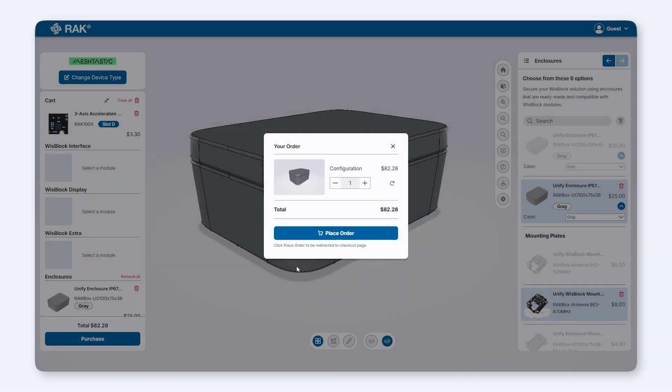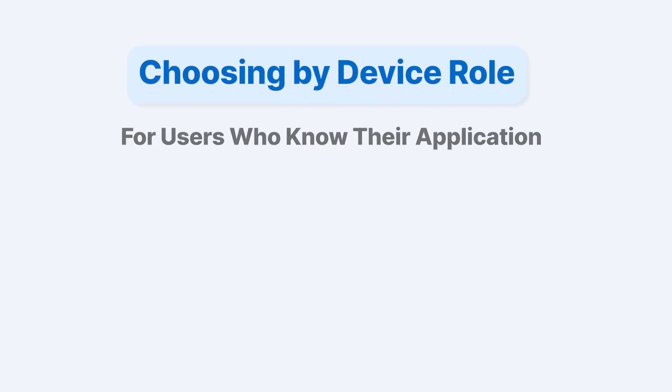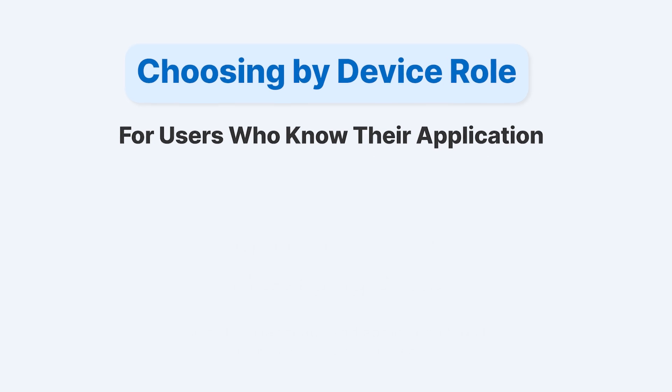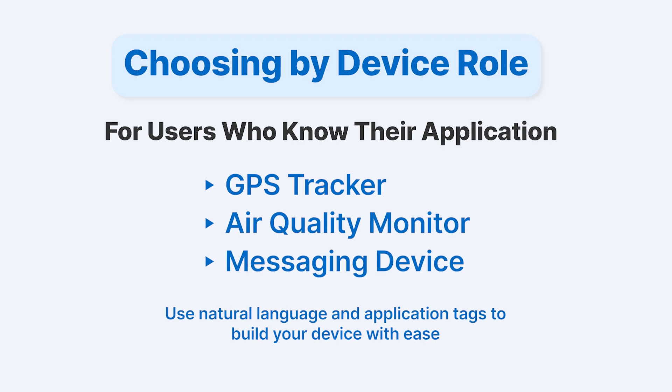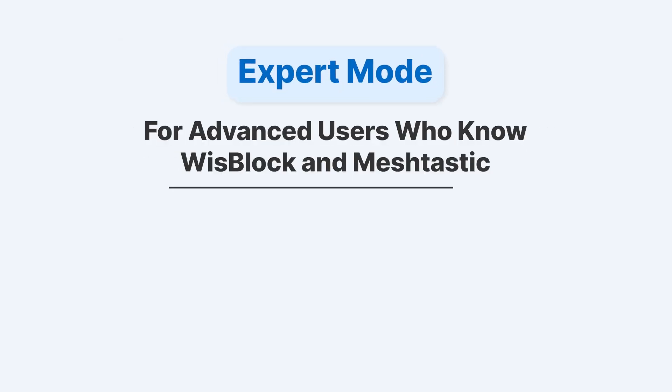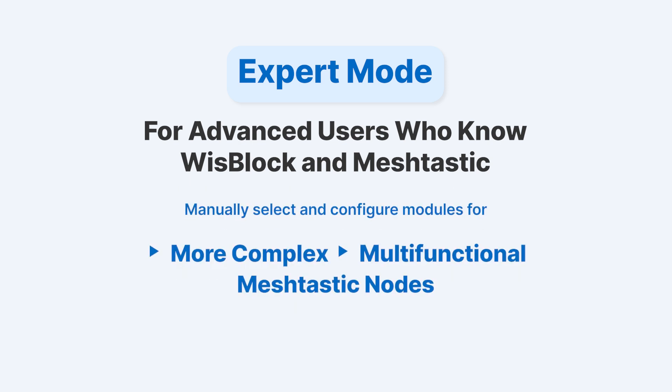Now that we've completed the Choose by Device Role option, let's recap the two approaches available in Meshtastic Designer. Choose by Device Role is ideal for users who know what they want to build, using natural language and application tags like GPS Tracker or Air Quality Monitor — this approach simplifies the process and helps you create a device quickly. On the other hand, Expert Mode is designed for advanced users familiar with Meshtastic and WisBlock. It allows for manual module selection and is perfect for creating complex or multifunctional Meshtastic nodes. Let's now explore Expert Mode.